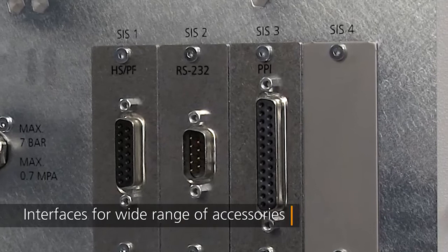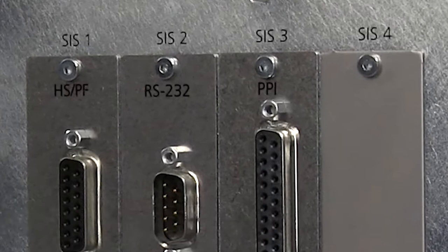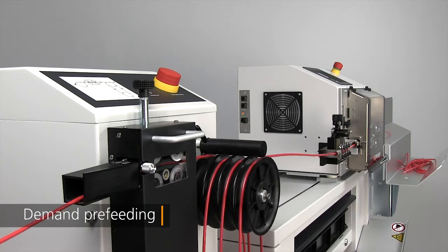Offering exceptional system versatility, the EcoStrip 9380 is available with interfaces for a wide range of peripheral accessories including pre-feeding, a variety of marking types, and post-processing wire stacking and coiling.